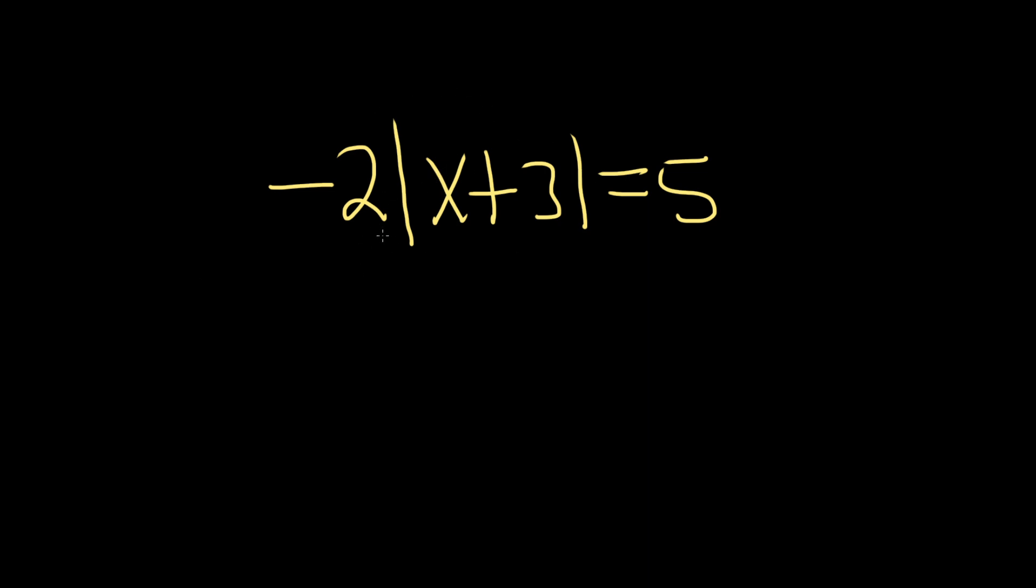So in this case, our absolute value function is being multiplied by negative 2, so we'll start by dividing both sides by negative 2.